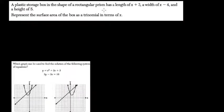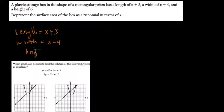A plastic storage box in the shape of a rectangular prism has a length of x plus 3, a width of x minus 4, and a height of 5.